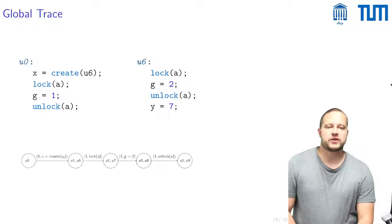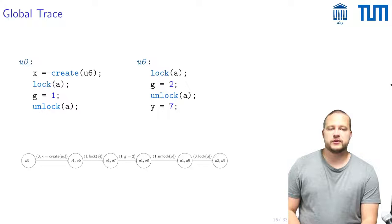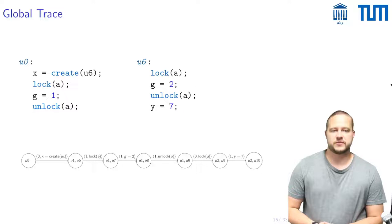So one could have for example this example where the first thread first executes this create edge then the second thread does the lock and sets the global to some value and then the second thread does the unlock and then it's the turn of the first thread again who then locks A and then maybe this local y is set to 7. So this could be some sort of representation of a global trace.